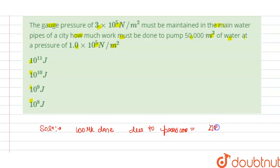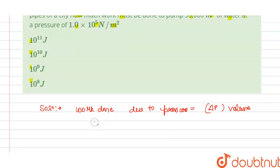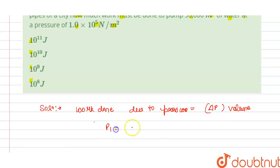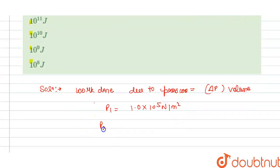is equal to change in pressure multiplied by volume. We have the pressure of water: P₁ is 1.0×10^5 N/m² and P₂ is 3×10^5 N/m². We can find the change in pressure.